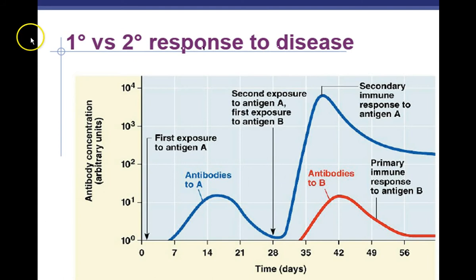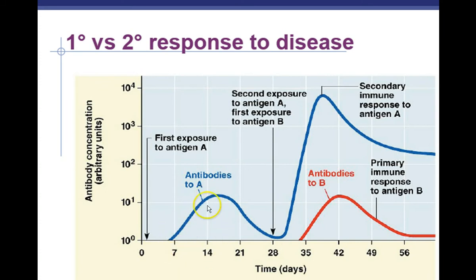Now let's look at the primary versus secondary response to disease. The primary response takes longer — let's say it's the flu virus. About six or seven days after first exposure you start making more clones of those B cells, and around 14 days later you've got a fair amount of antibodies. But that took 14 days, during which the flu has already been multiplying in your cells — that's why you feel sick. Eventually your body kicks the antibodies into high gear, suppresses the flu virus, and the flu goes away.